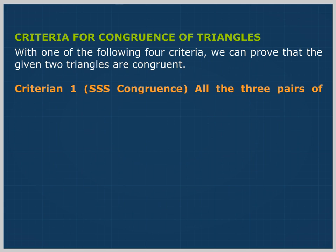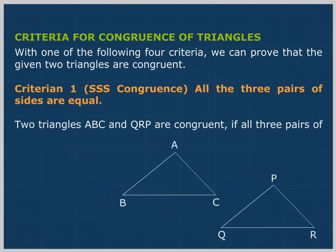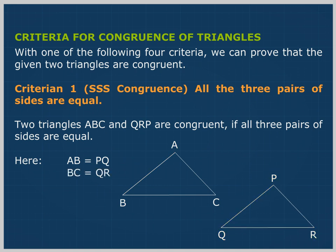Criterion 1: SSS Congruence — all three pairs of sides are equal. Two triangles ABC and PQR are congruent if all three pairs of sides are equal. Here, AB equals PQ, BC equals QR, and AC equals PR. So, triangle ABC is congruent to triangle PQR.